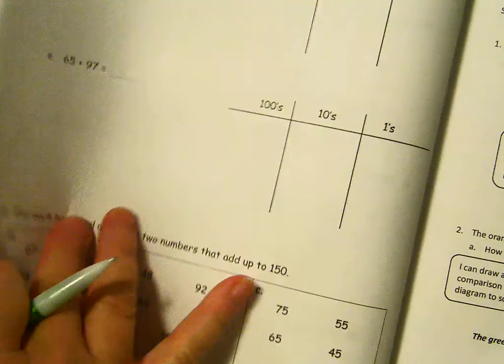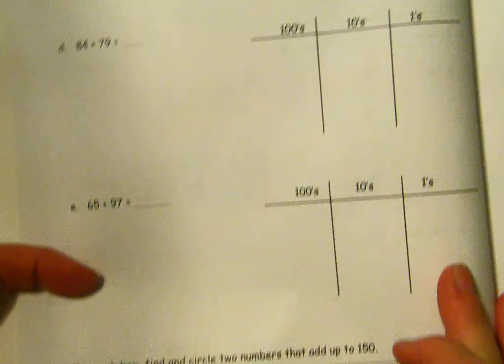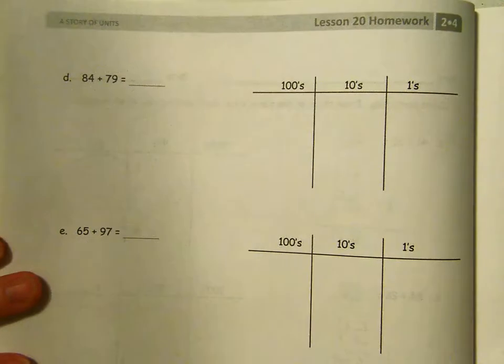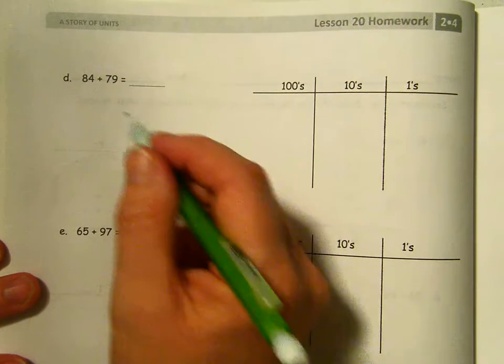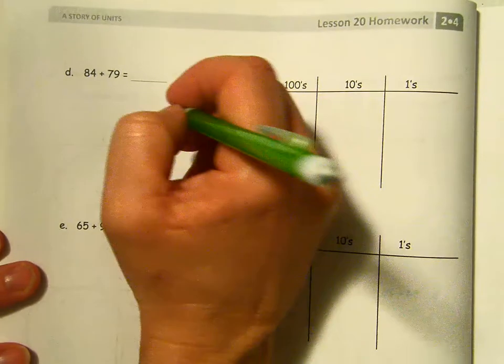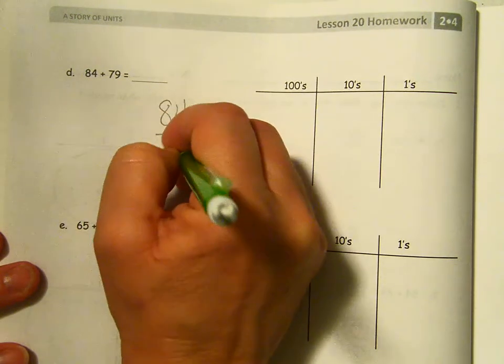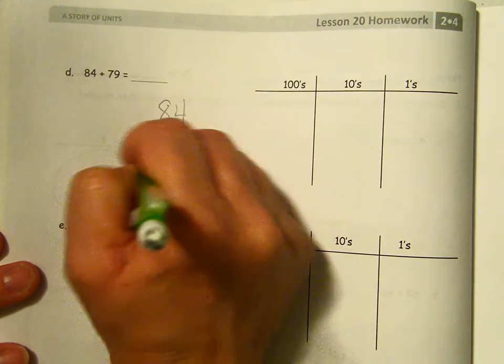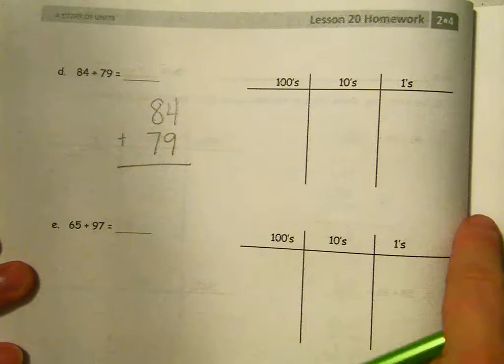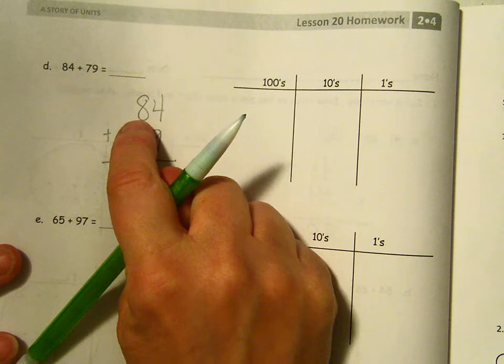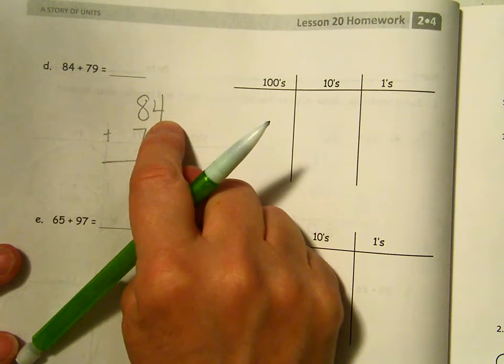We have a couple more on the next page. Page 88. Starting by writing vertically 84 plus 79. 84, 79, carefully lining them up with the ones and the 10s. And then I'm going to model it.